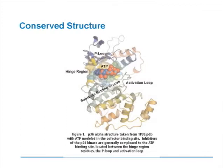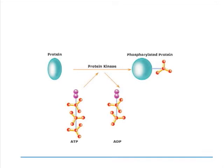In this simple diagram, we see that a protein — the substrate — will be bound to the protein kinase, and then ATP will have its gamma phosphate, or the terminal phosphate, cleaved from it, and then it will be transferred onto the hydroxyl group of the substrate protein.